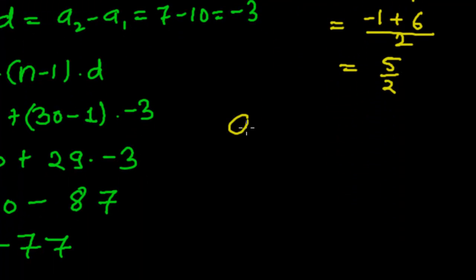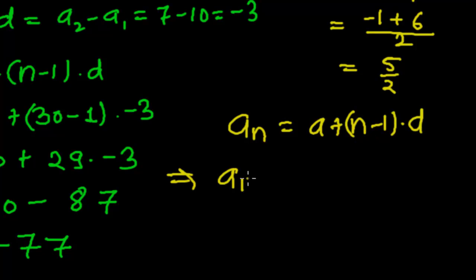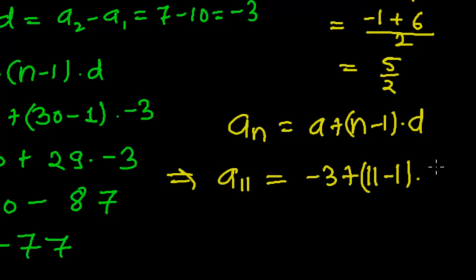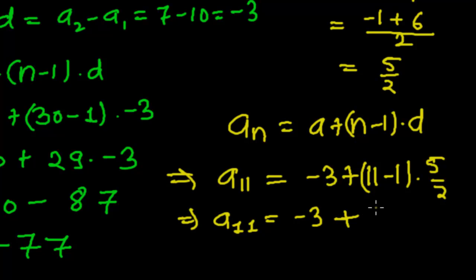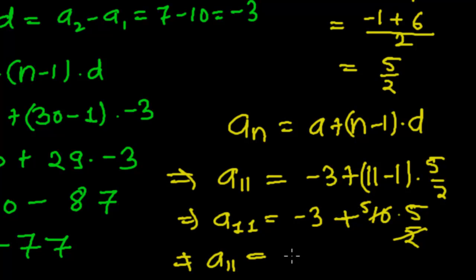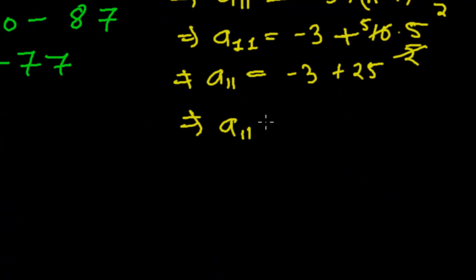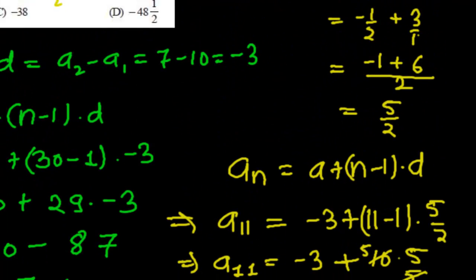Now let me use the nth term formula: a_n equals a plus (n minus 1) times common difference. Since we need the 11th term: a11 equals negative 3 plus (11 minus 1) times 5 divided by 2. That is negative 3 plus 10 times 5 over 2, which is negative 3 plus 25. So the 11th term equals 22.